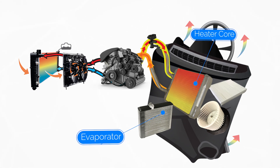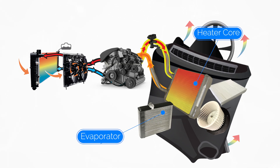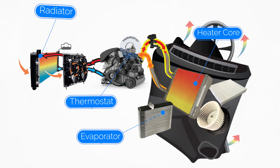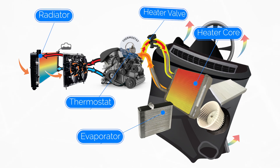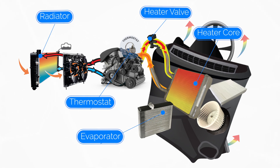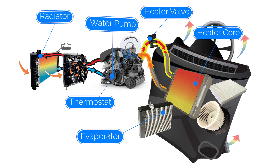In order to generate heat in the vehicle cabin, the heater core requires hot coolant from the engine. As the engine reaches operating temperature, the thermostat will open allowing coolant to flow to the radiator and heater core. When the heating system is activated, the heater valve will open allowing high temperature coolant from the engine to travel to the heater core. Like the radiator, the heater core relies on the water pump to moderate coolant temperature as it cycles to and from the engine.